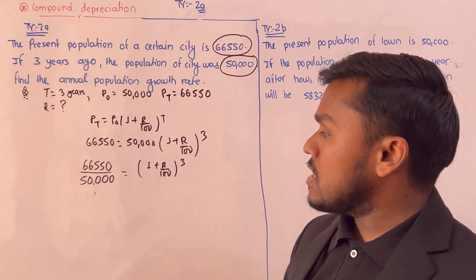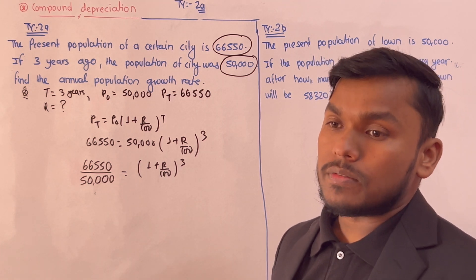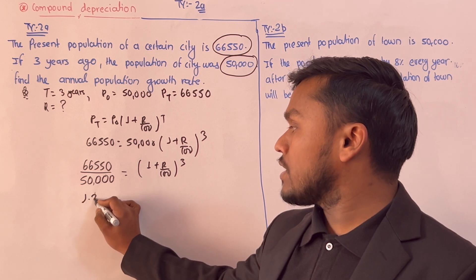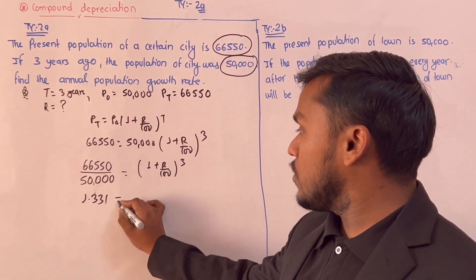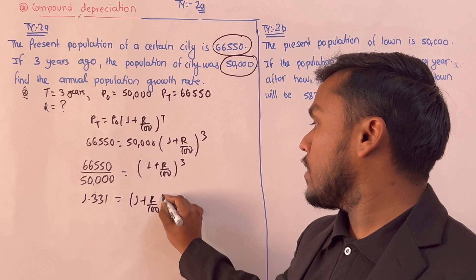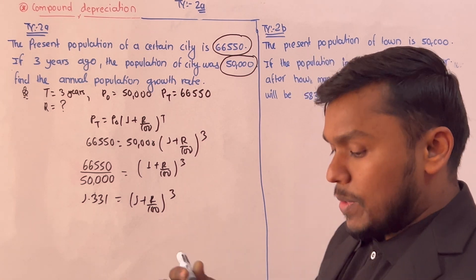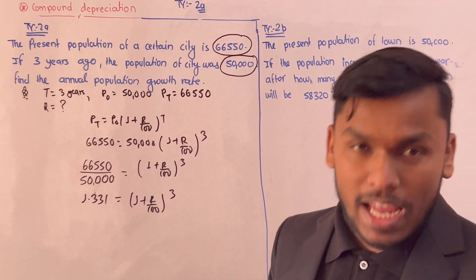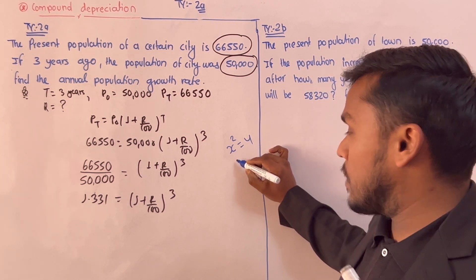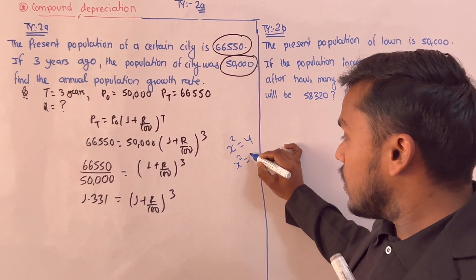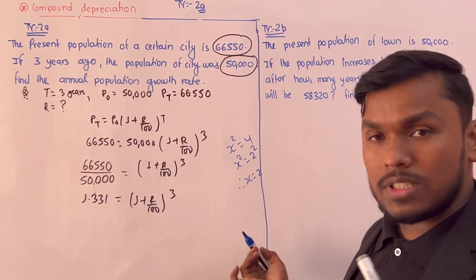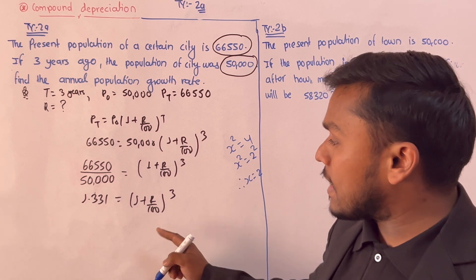So (1 plus r upon 100) to the power 3 gives us X squared equals 470 — well, X squared equals 470. Then X equals 2, so using cube root: X equals 2.